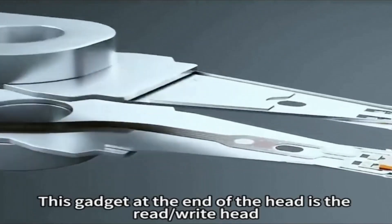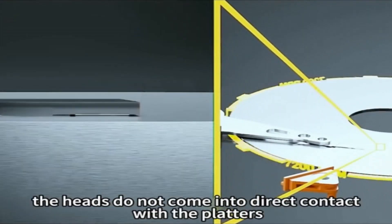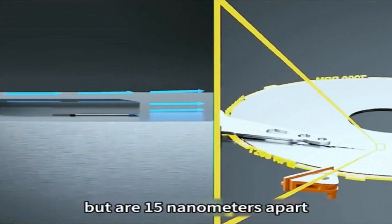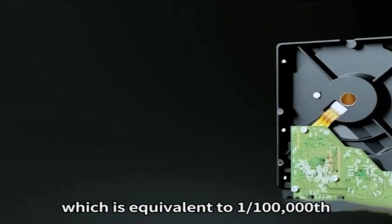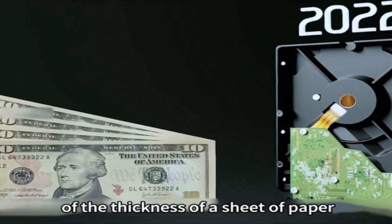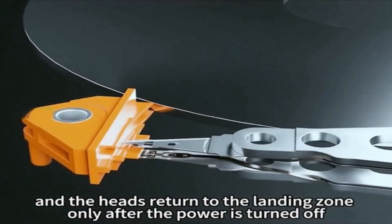This gadget at the end of the head is the read/write head. To avoid wear and tear, the heads do not come into direct contact with the platters, but are 15 nanometers apart, which is equivalent to 1/100,000th of the thickness of a sheet of paper, and the heads return to the landing zone only after the power is turned off.